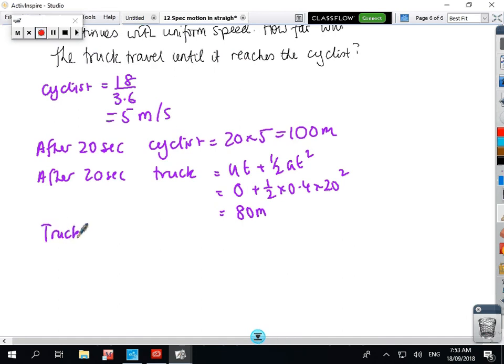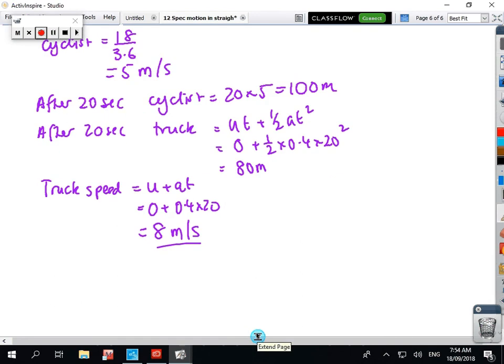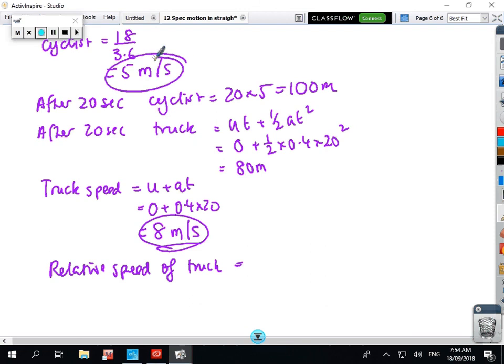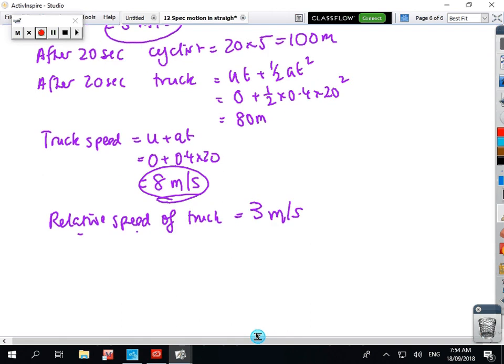The truck's speed is going to be U plus AT, so 0 plus 0.4 times 20. So at that stage, the truck is at 8 metres per second, and that's what its speed is going to be. Now, the relative speed of the truck. So the truck's going at 8 metres, the cyclist is going at 5 metres, so the difference between the two, so the relative speed is 3 metres per second.